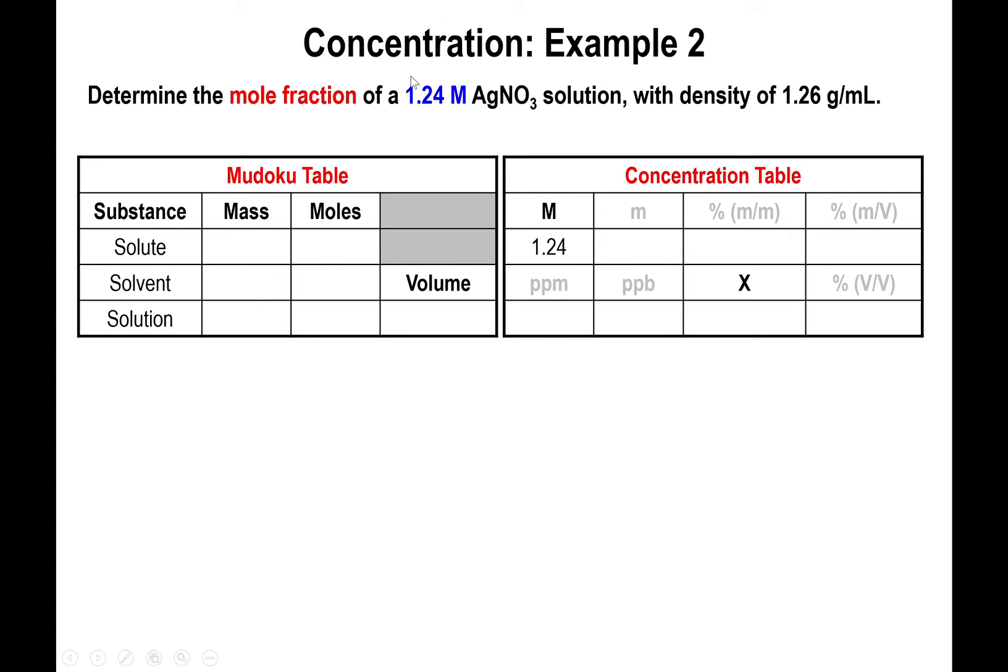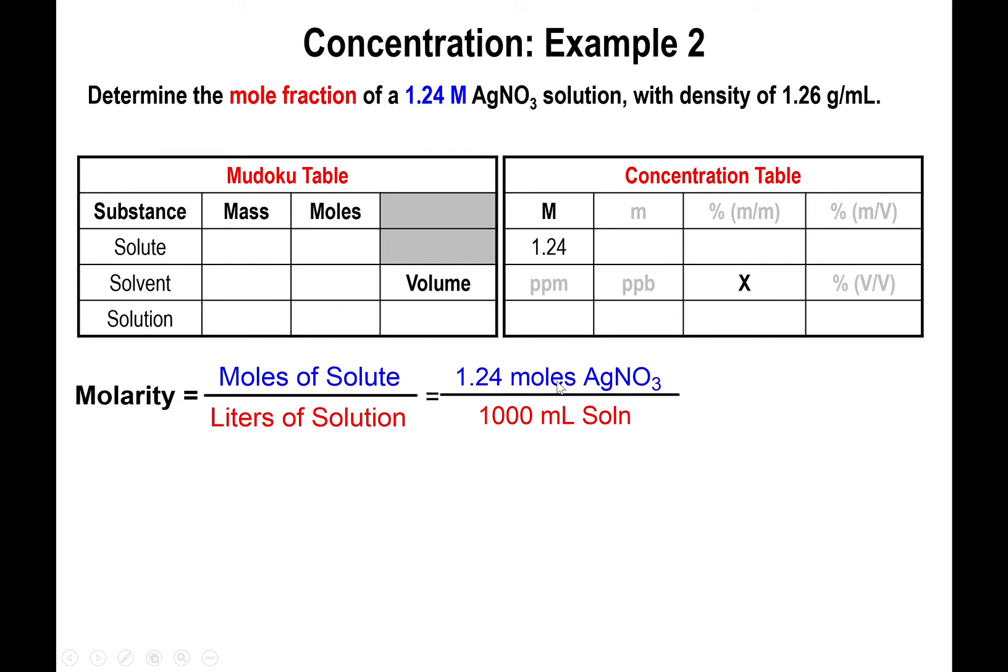The fact that this silver nitrate solution is 1.24 molar concentration is the same as saying you have moles of solute over liters of solution. In this case, specifically 1.24 moles silver nitrate over one liter of solution. I'm writing that as 1000 mLs because I'm going to use that in combination with the density to find out a few other things. But this is the same thing as saying 1.24 molar. We're going to literally take the numerator and denominator right into the table.